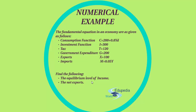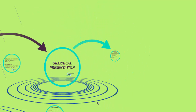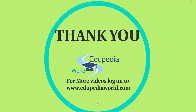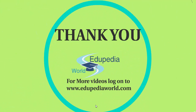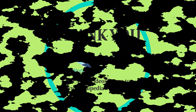So this is how we can determine the equilibrium level of national income under the four sector model. Through this example you have got the four sector model more clear. Thank you for watching Edupedia World and have a nice time.